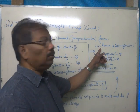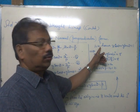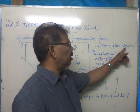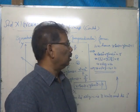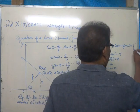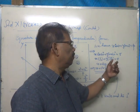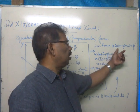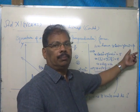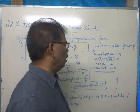Now, consider, we have the general form x cos omega plus y sin omega is equal to p. The normal form of equation is x cos omega plus y sin omega is equal to p.